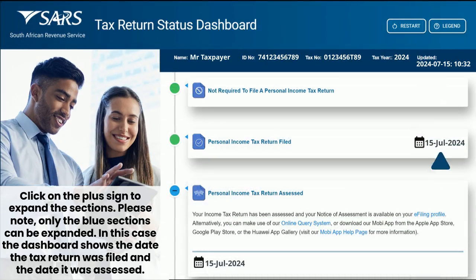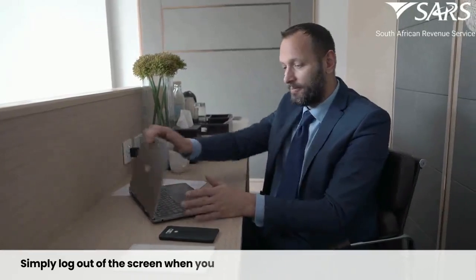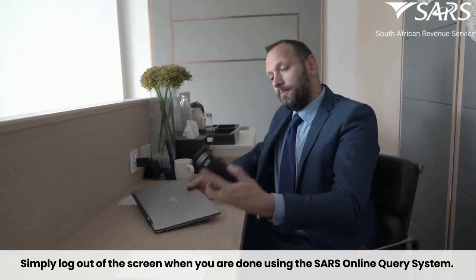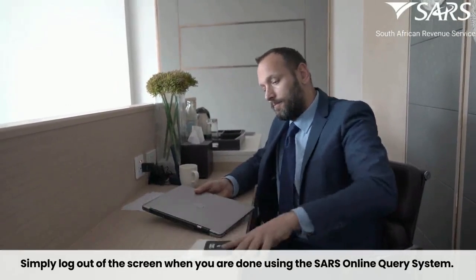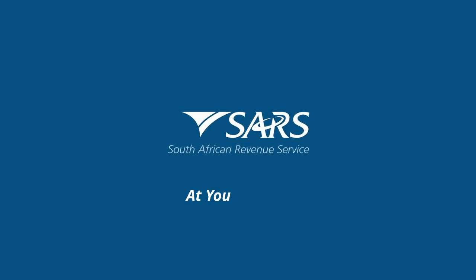In this case, the Dashboard shows the date the tax return was filed and the date it was assessed on the expanded blue section. Simply log out of the screen when you are done using the SARS Online Query System. Thank you for using our SARS Online Query System. SARS, at your service.